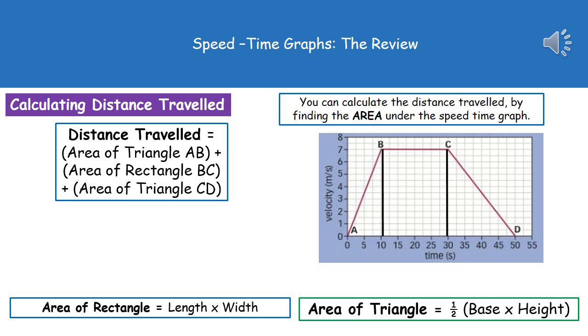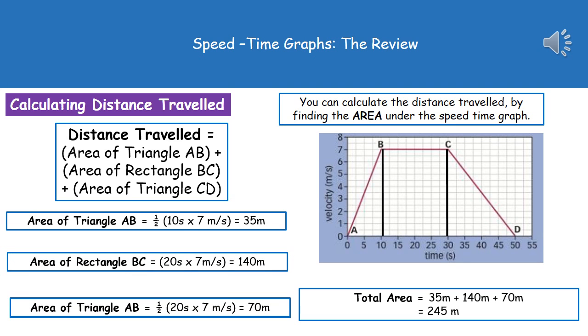So if we actually work out those three calculations, if we're having a look at our first triangle, which is our AB triangle, we can see that it's taken 10 seconds. So it's going to be 10 times by our speed, which is 7, and then we times that by half. And that gives us our answer of 35 meters.